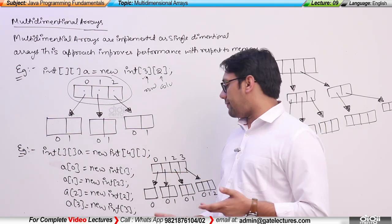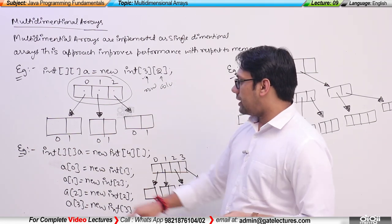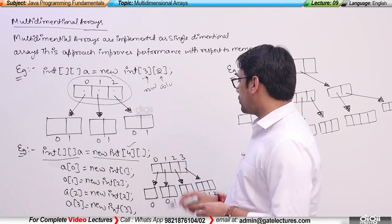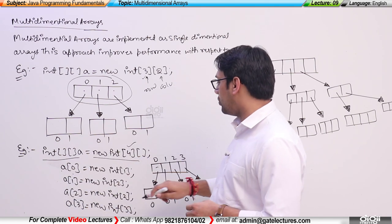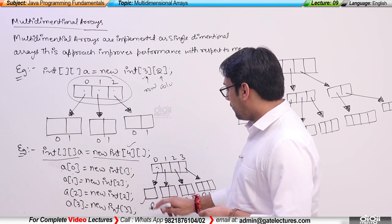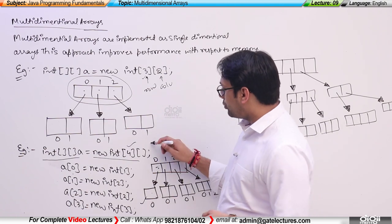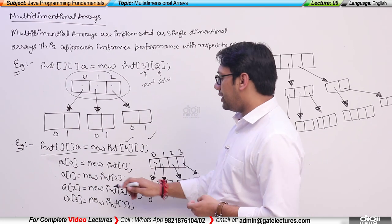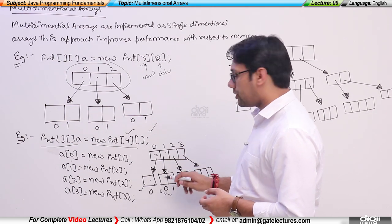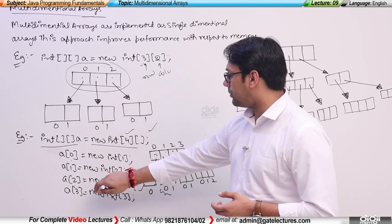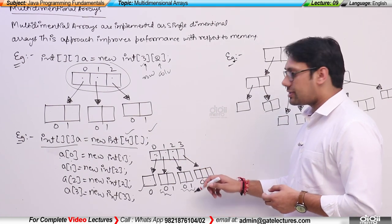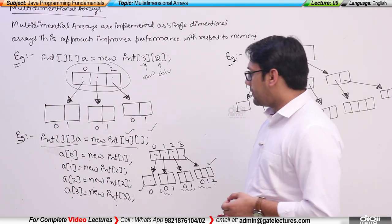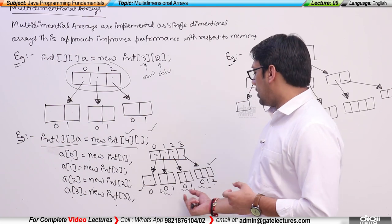You can also declare a two-dimensional array where every dimension will have different sizes. Here I am creating a two-dimensional array — this is the declaration, this is creating an object. It specifies that we are going to have four rows. For example, `a[0]` means for this row I am creating `new int[1]`, pointing to a one-dimensional array with one index location. Then `a[1]` is `new int[2]`, `a[2]` is `new int[2]`, and `a[3]` is `new int[3]`. So this is a two-dimensional array where every row has a different number of columns.